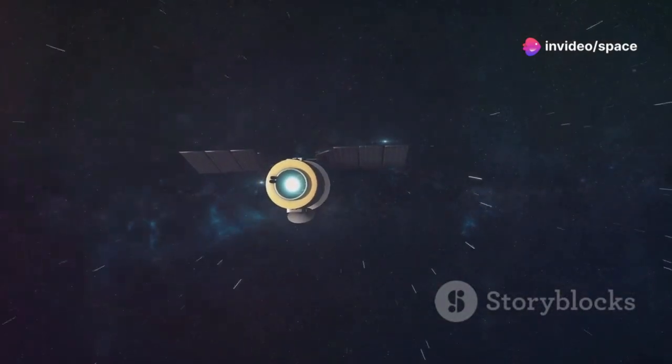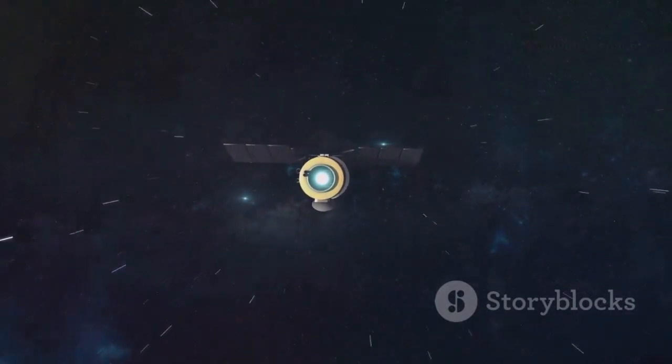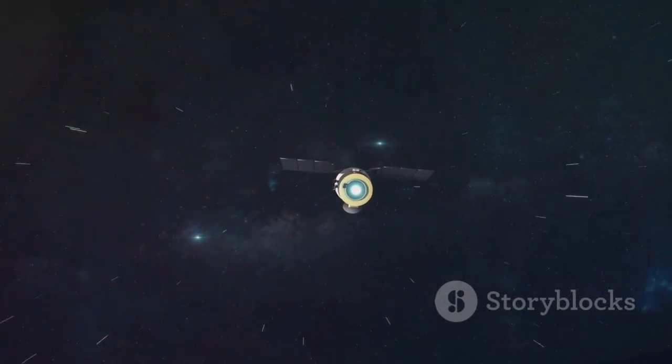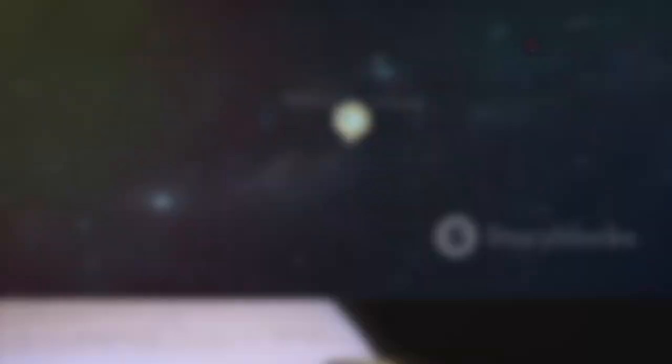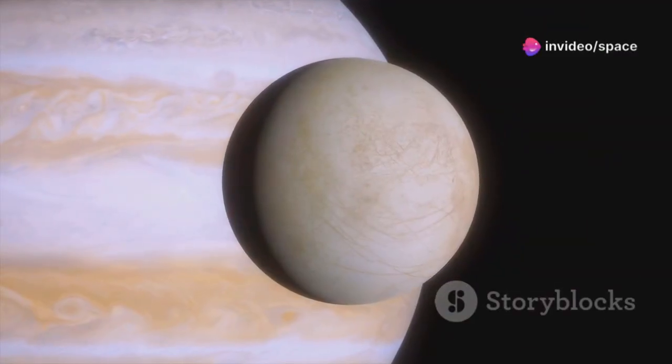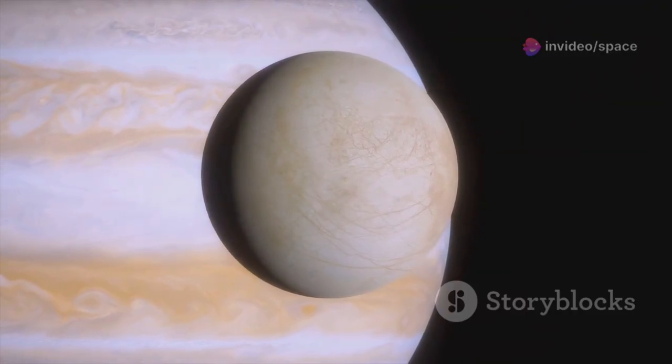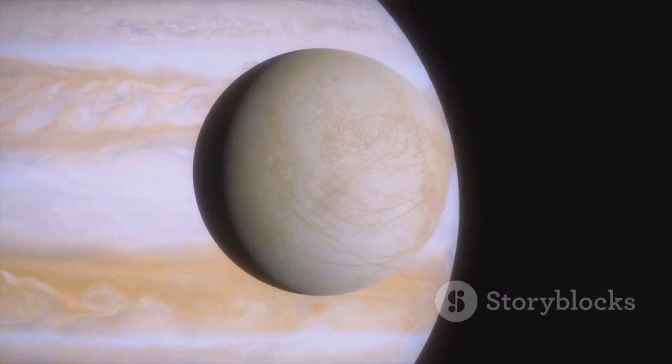But Jupiter's moons delivered the biggest surprises. Io amazed scientists with its explosive volcanoes, erupting for the first time ever seen beyond Earth, hurling molten rock into space. Meanwhile, Europa's fractured icy shell hinted at a hidden ocean below, sparking hopes that life might exist in its shadowy depths.